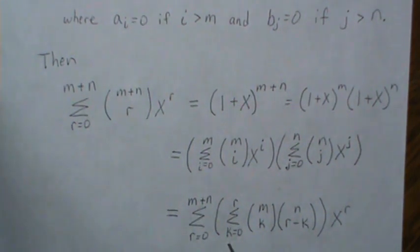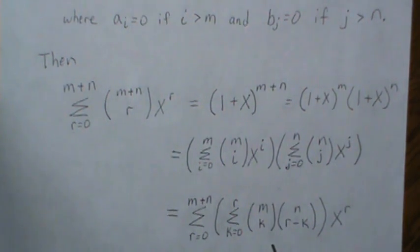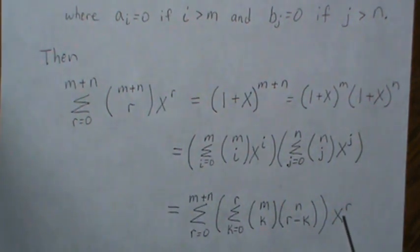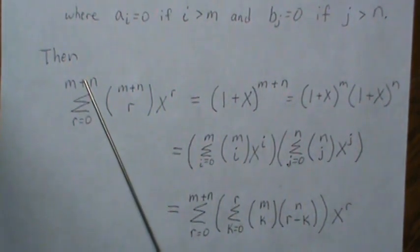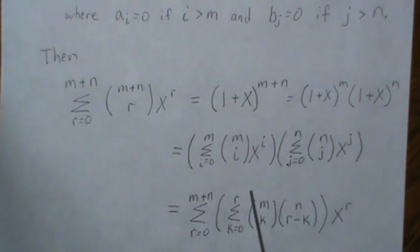This equals the sum from zero to n plus n with this inner sum. If we look at what we started with and what we have, and compare the respective coefficients in front of the x^r, these are equal. If two polynomials are equal, the coefficients have to be equal. So this coefficient has to equal this coefficient.